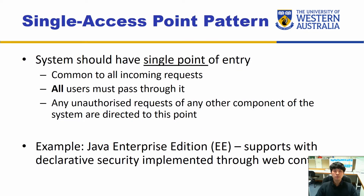The first pattern is the single access point pattern. As it sounds, it's quite straightforward — you provide only a single point of entry to the system, so all incoming requests go through that particular point for inspection. This is especially useful when installing a firewall, ensuring all traffic flows through it every single time. Any unauthorized requests to any component of the system are directed to this point and can be filtered out. There are not just firewalls but other ways to implement this pattern — for example, Java Enterprise Edition (JEE) supports declarative security through web containers.